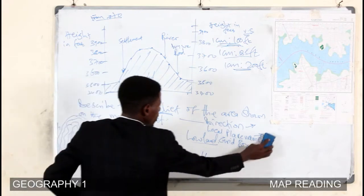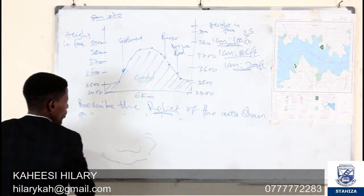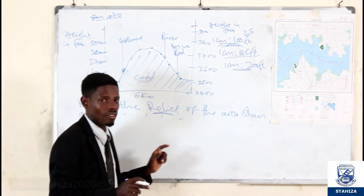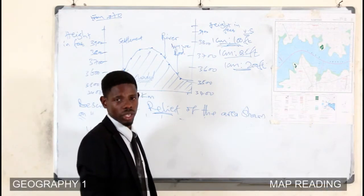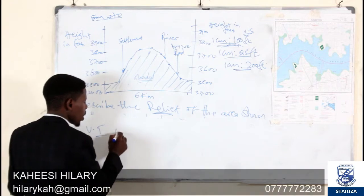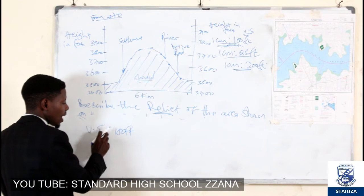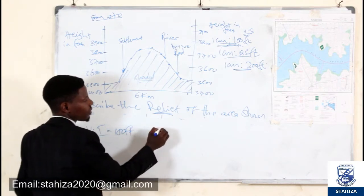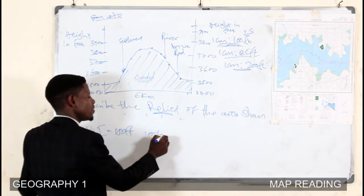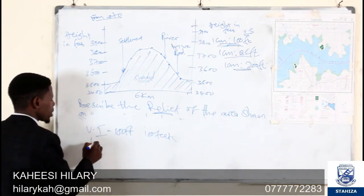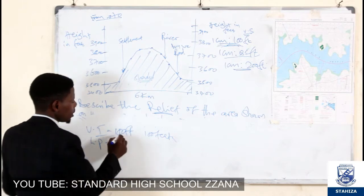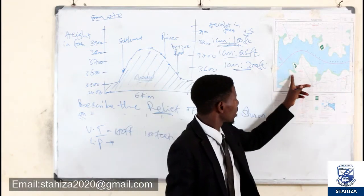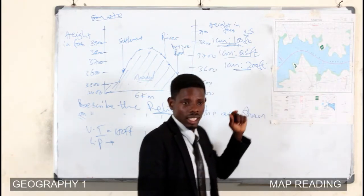There are common answers that everybody must not forget while describing relief. First, the vertical interval — we saw how to calculate it, and it is always given in the southwestern part of the map extract, for example 100 feet. Write it while describing the relief: the vertical interval of Navieso map extract is 100 feet. Then tell us the lowest points, which are always found in the basins, lowlands, along lakes, and in swamp areas.